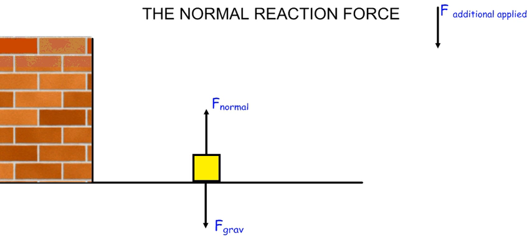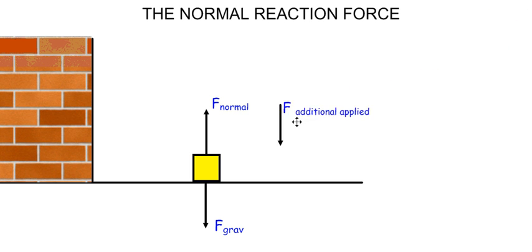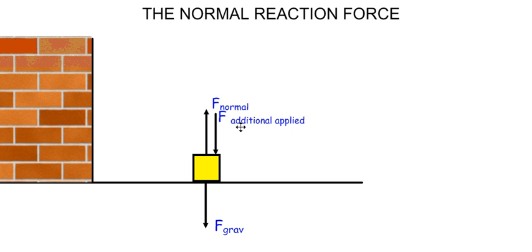What happens, however, to the size of the normal force if there was an additional applied force that was also applied to push the crate downwards? Because of the additional applied force, the push of the crate down onto the ground is not only the gravitational force, but, in sum, the additional applied force as well.